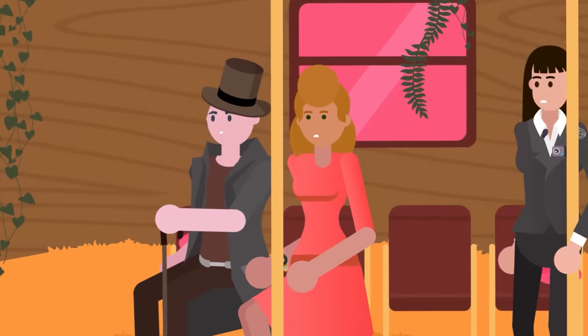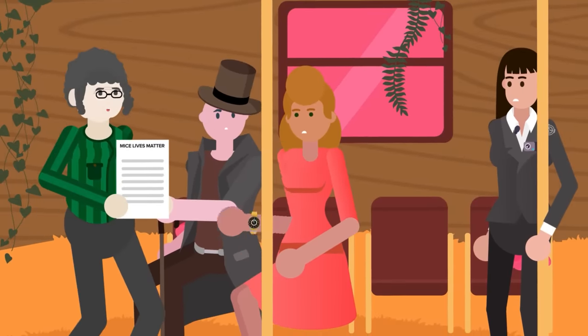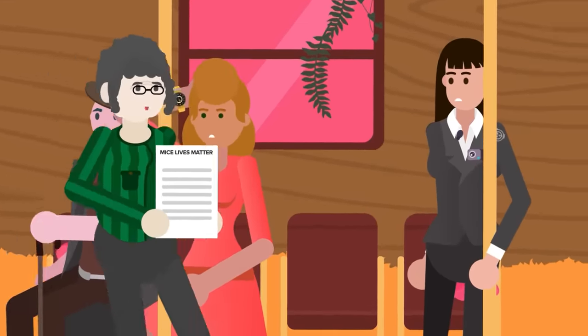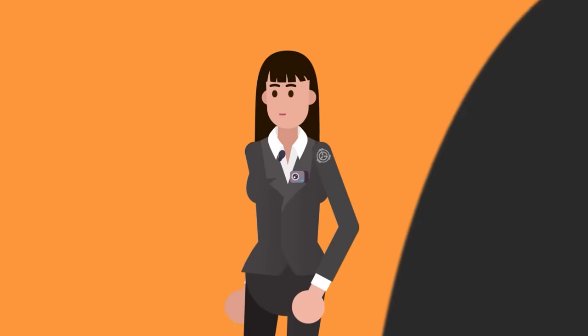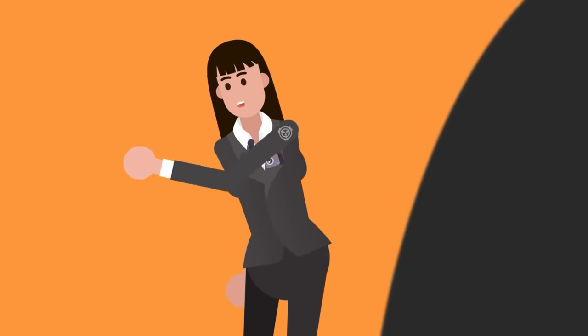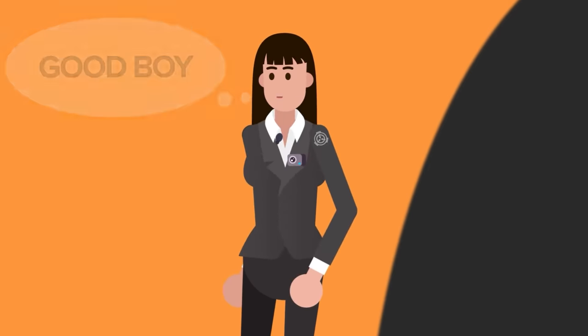She also chatted with a sweet elderly lady on the train who was getting people to sign a petition to allow mice back onto the Corgi transit system. When Agent Davies departed the system, she patted the dog and told him he was a good boy. Before returning to normal size.